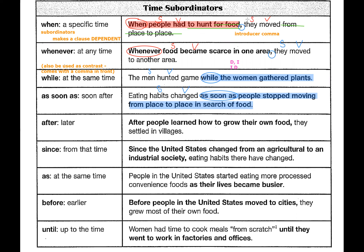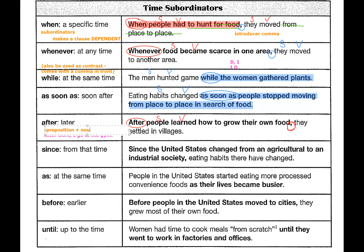Next, 'after' — here we go back to having our dependent clause before the independent clause, so there is an introducer comma. Keep in mind that a word can function as different parts of speech. In this case, 'after' is followed by subject and verb, so it is a subordinator. Remember, a subordinator is followed by a clause — subject and verb. Compare with: 'After work, I go to the gym.' Here 'after' is a preposition because it's followed by a noun instead of a clause, making it a prepositional phrase.